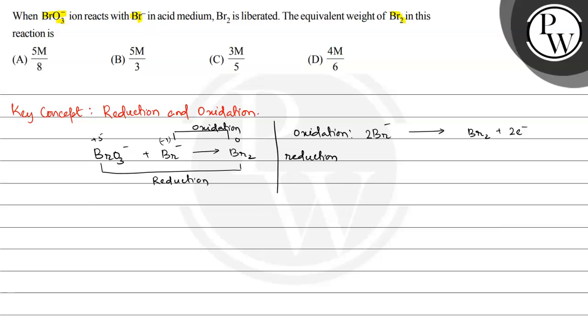For the reduction reaction, BrO3- gives Br2. If we balance it, this will be 2 BrO3- going from +5 oxidation state to 0 oxidation state per Br atom.